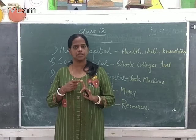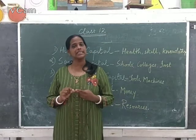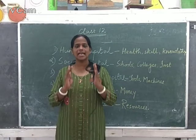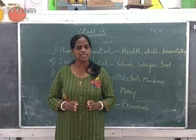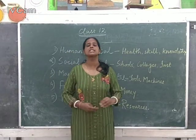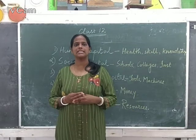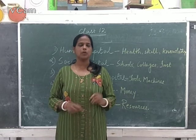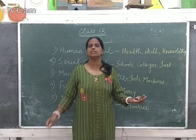Half of this we have already done in chapter three, so you may recollect it. Natural capital — that is resources — provides four services. One is the provisioning service. Then there is regulatory service, cultural service, and supporting service. These four services are provided by the most important asset, that is natural resources.